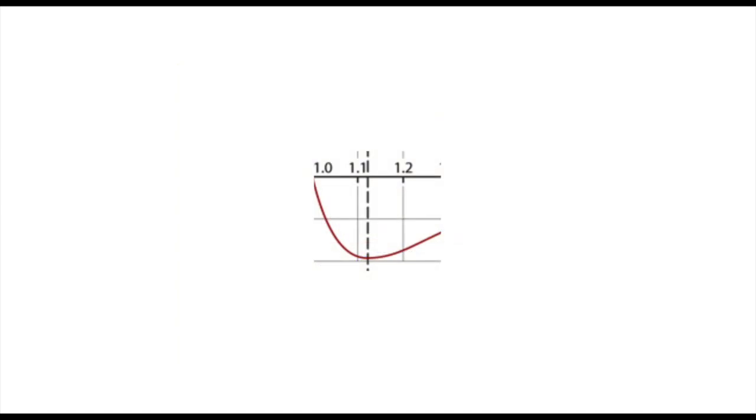The point where the curve dips to its lowest point represents an equilibrium distance. At this distance, the attractive and repulsive forces balance out, and the potential energy is at its minimum. This is where the atoms are most stable.